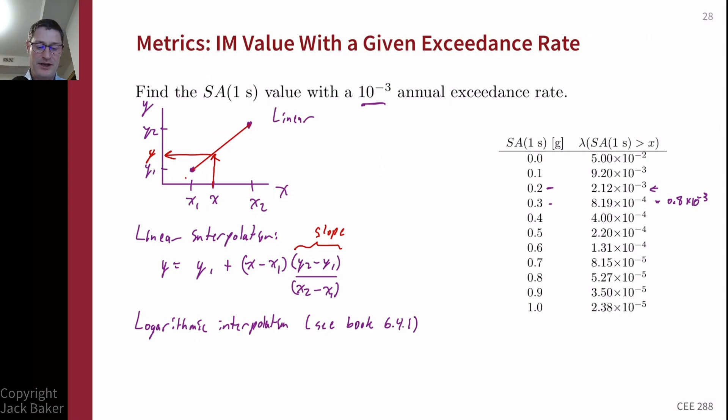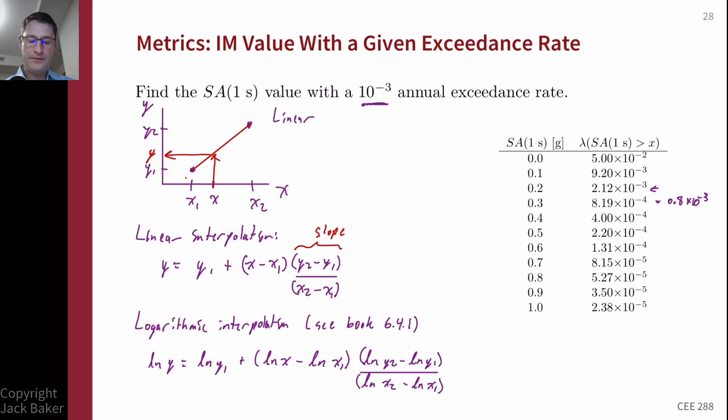Before I spell out the equation, I'll note I have some additional text about this in the book in section 6.4.1 for some text about this and these formulas. But the idea is going to be, we'll just take logarithms of the x and the y values in that linear interpolation formula. So we'll have log y equals log y1 plus log x minus log x1, and then we'll have log y2 minus log y1 over log x2 minus log x1. So that formula will give us a log interpolation where we'll get a straight line in the log log plot. The result from that will give us a log y value, and we can just take an exponential of that result to get back to the actual y value.